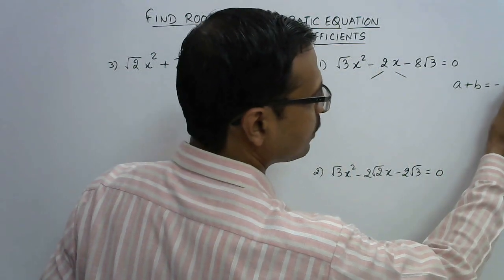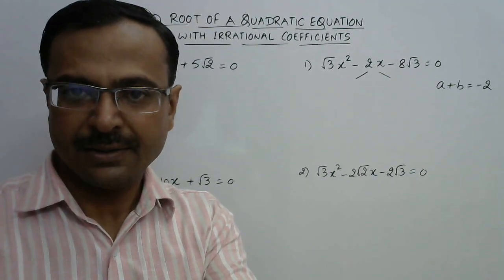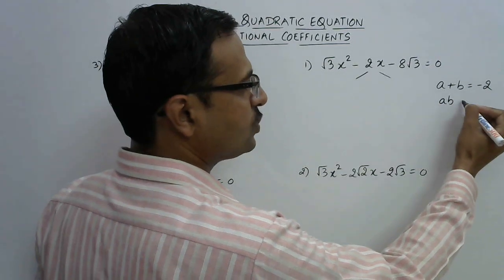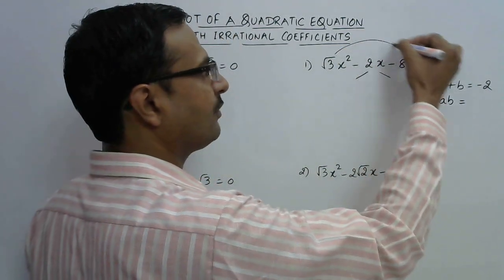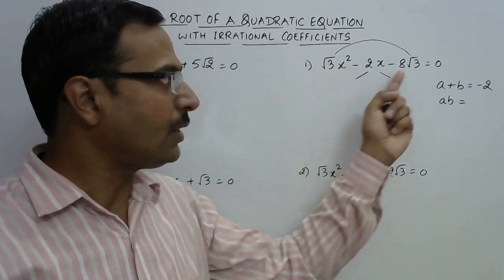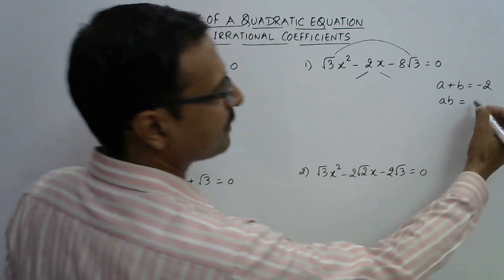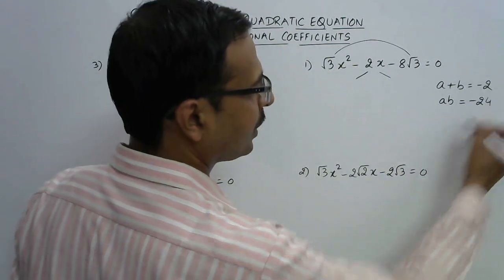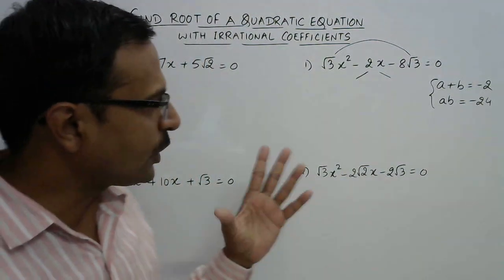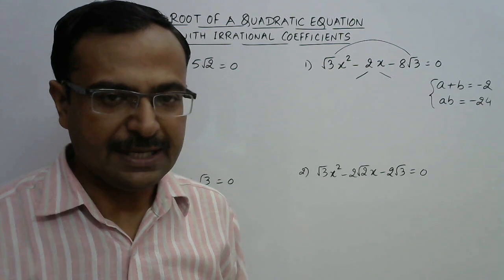So a + b should equal -2, and the product ab should equal the product of the coefficient of x² and the constant term, which is -8 × 3 = -24. If you spot the two numbers whose sum is -2 and product is -24, then everything else will be very easy.